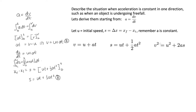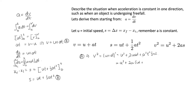Starting from v = u + at and squaring both sides gives v² = u² + 2uat + a²t². Factoring out 2a and using the result from equation b that ut + ½at² = s, we get v² = u² + 2as. These three kinematic equations describe motion when acceleration remains constant.